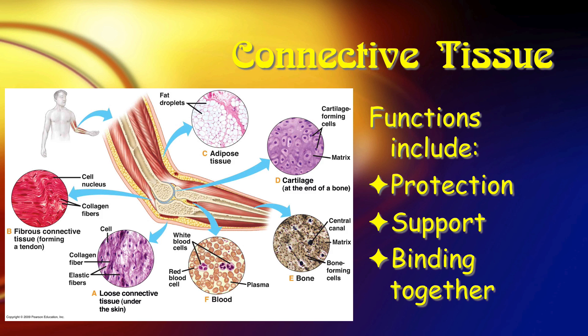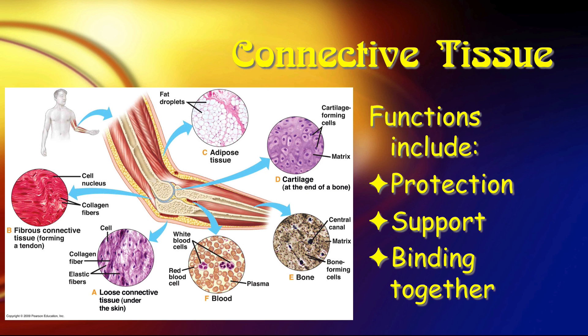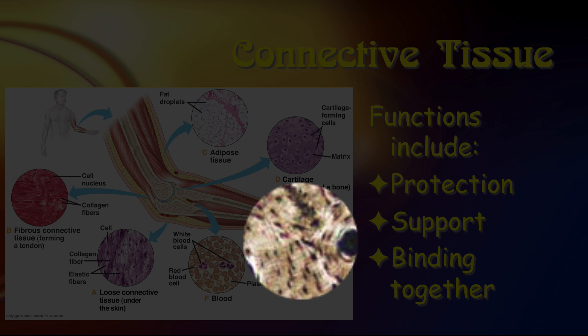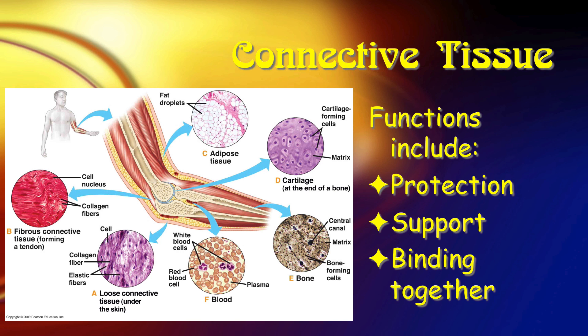For the moment, we're going to just have a couple major functions, and these include protection. Connective tissues can protect other things in the body. An example of this can be bone — that's a very good one. Think of your ribs and how they protect important organs like the heart and the lungs from getting bashed and battered.